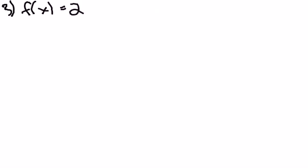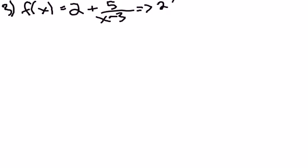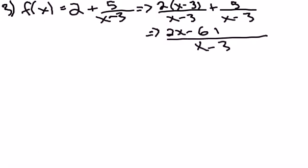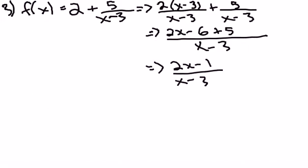Number three takes a little bit of a different format. To get started, I'm going to combine the two parts by multiplying by x minus 3 on the side of the 2, then distribute the 2 so everything is over x minus 3. In the end, I have 2x minus 1 over x minus 3 as the actual function in the same format as before.